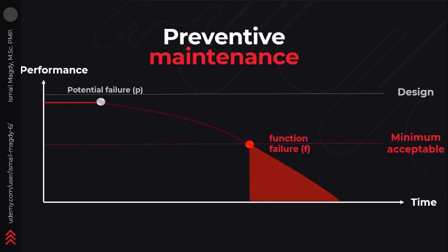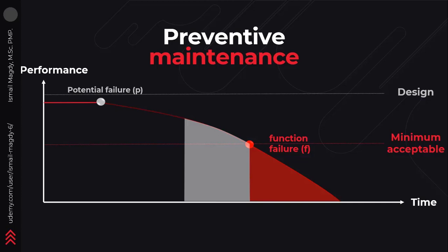Even if those parts show no signs of wear and tear. Preventive maintenance is actually carried out just before the functional failure actually occurs, and this maintenance helps in preventing that functional failure.